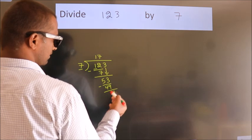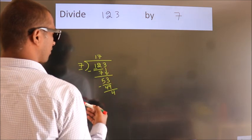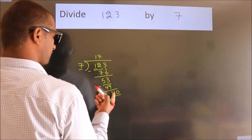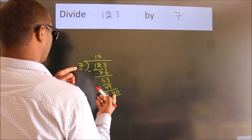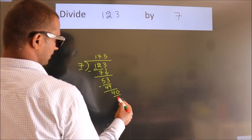After this, no more numbers to bring it down. So what we do is we put dot, take 0. So 40. A number close to 40 in 7 table is 7 fives 35.